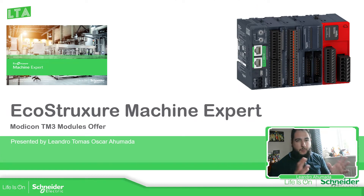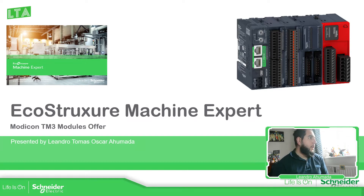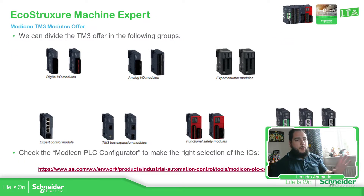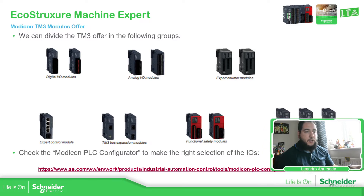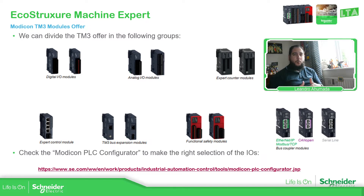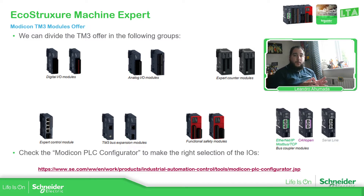This is just an explanation of the offer that we have for different IOs and the expansion and the special modules that we have. This is an overview. The M241 and the M262 have some embedded IOs. The M251 doesn't have any, so we need to add some expansion modules. The expansion modules for this range of PLCs is the TM3 — the Modicon TM3 offer that we're going to see today.